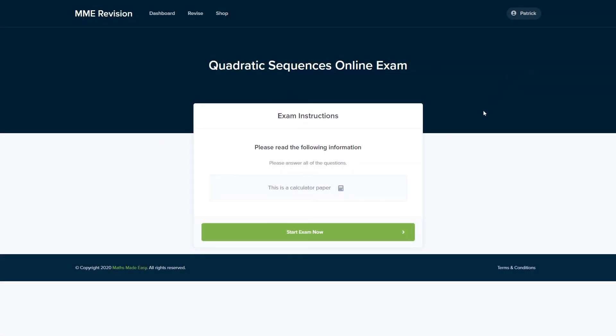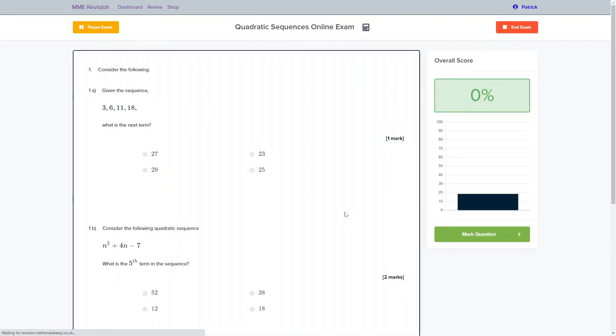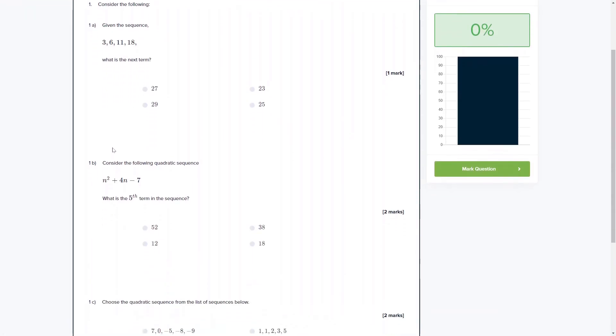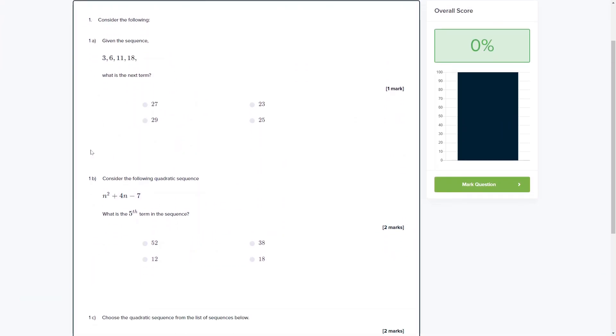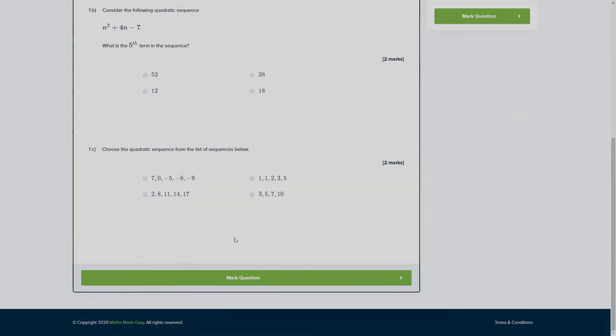Quadratic sequences are a skill that takes some practice so you can do so with our online exam. This is available through our revision platform and if you take the test you'll find loads of different questions to have a go at all of which you'll receive instant feedback on so you can keep track of where you're going wrong and find out how to improve in time for your actual exam. So if you're interested you can take the test by clicking the link below.